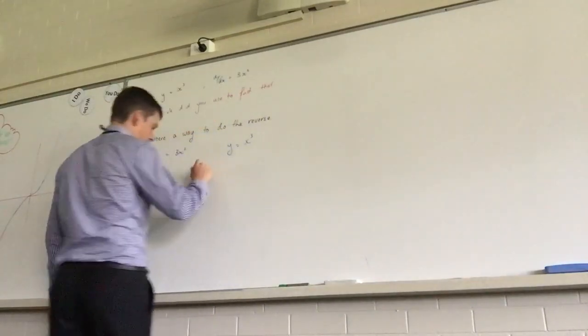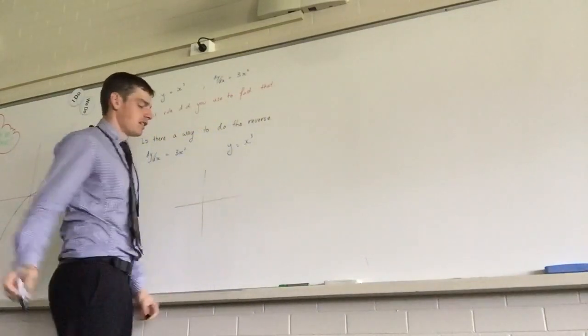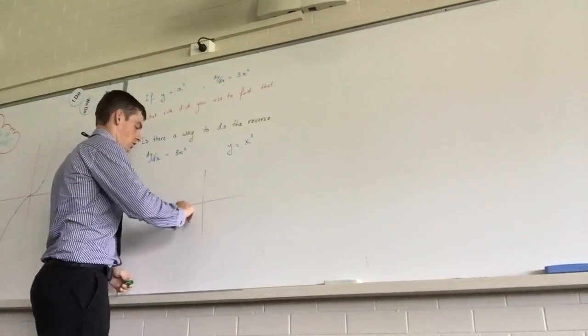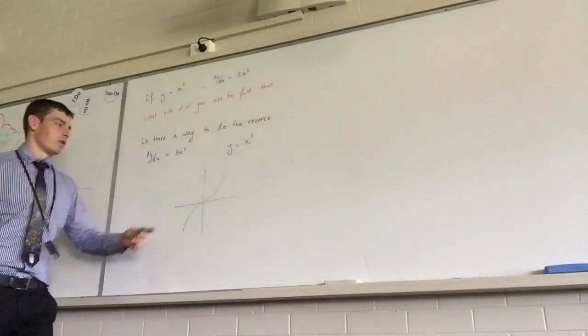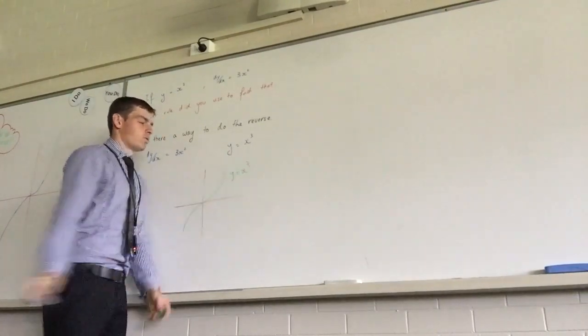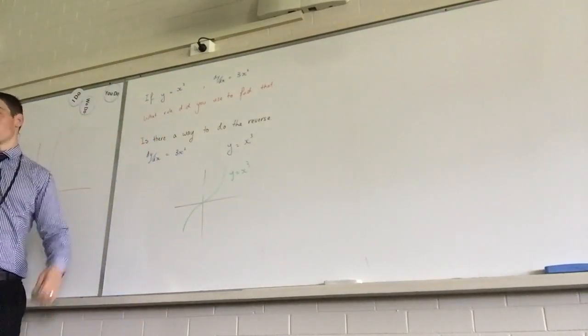Well, if I had, I'll do the same graph that I just have over there because I can't see it. If I have a function that looks like this, right, that's y equals x cubed. The derivative of that function is? 3x squared.